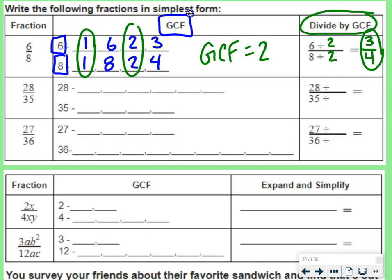28 over 35. Numbers that multiply to 28 would be 1 and 28, 2 and 14, and 4 and 7. That's it.